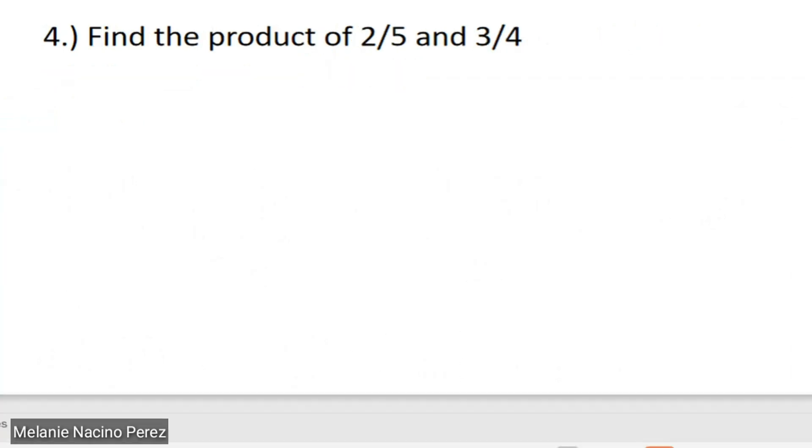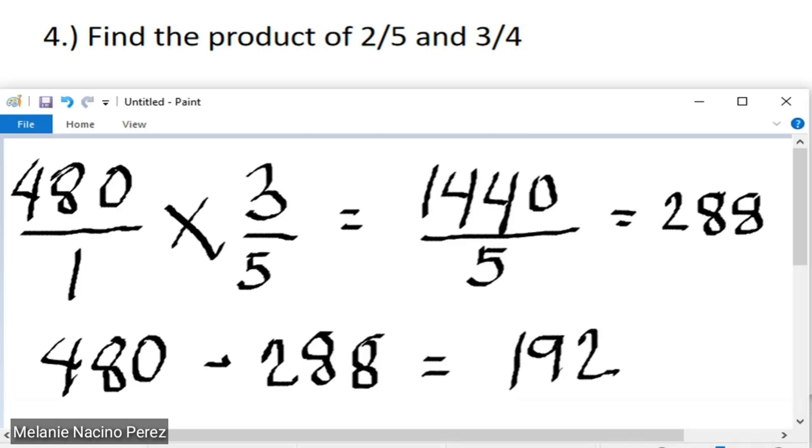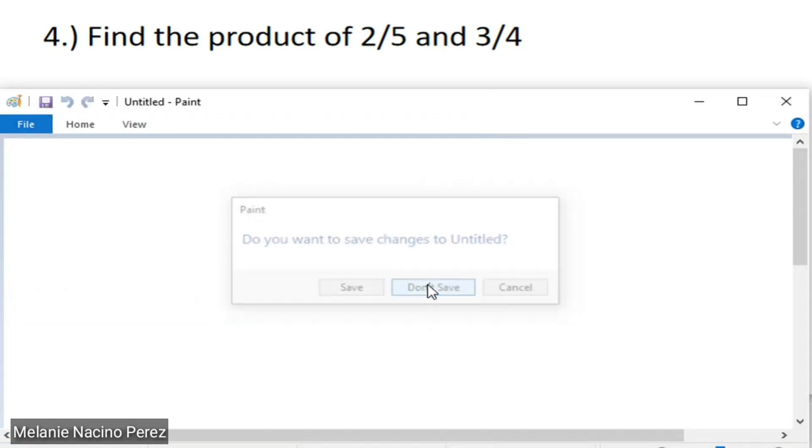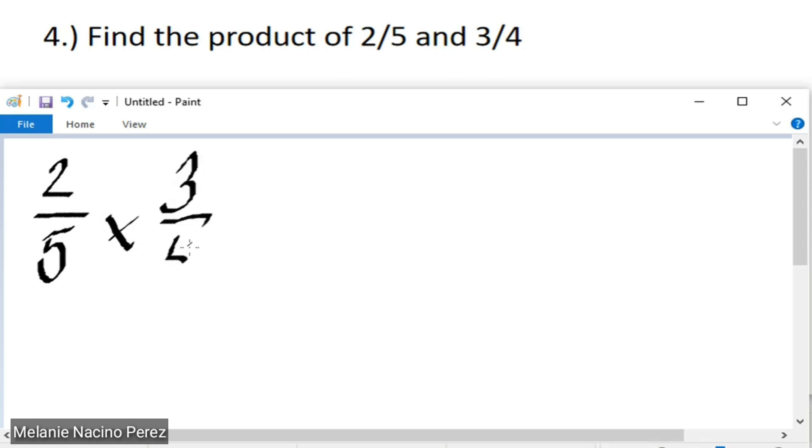And lastly, the last problem is find the product of 2 fifths and 3 fourths. So, this is very easy. All we need to do is multiply 2 fifths to 3 fourths. So, multiply the numerator to numerator. 2 times 3 equals 6. And 5 times 4 equals 20.